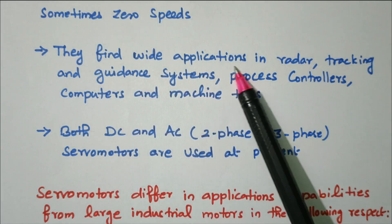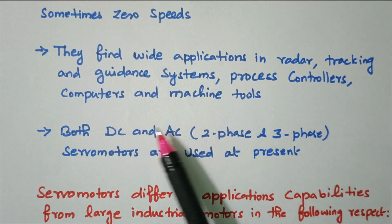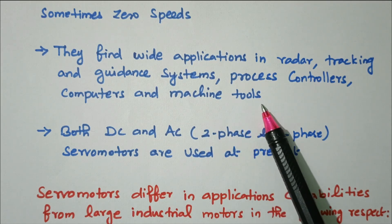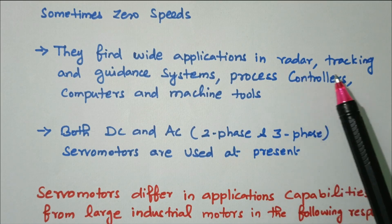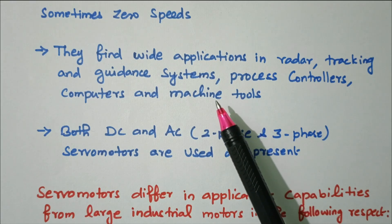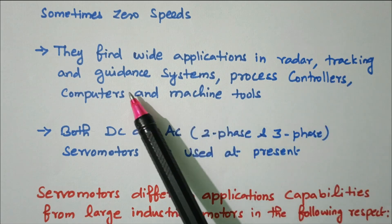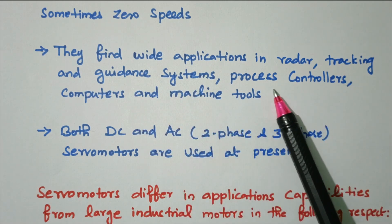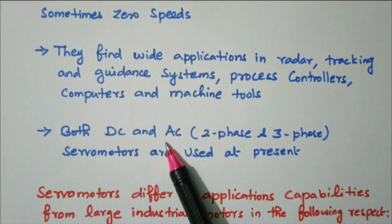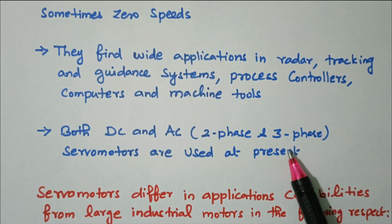They find wide application in radar tracking and guidance systems, process controllers, computers, and machine tools — wherever precision control is needed. In radar tracking and guidance, continuous rotation is not important; just moving and holding position with high torque is required. We are using this servo motor in process controllers, computers, and machine tools. Both AC and DC servo motors are available; at present, two-phase as well as three-phase motors are available.